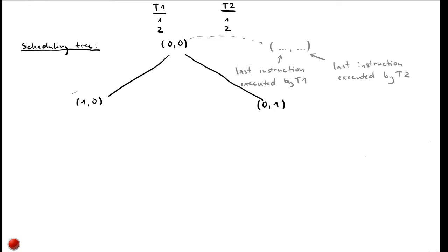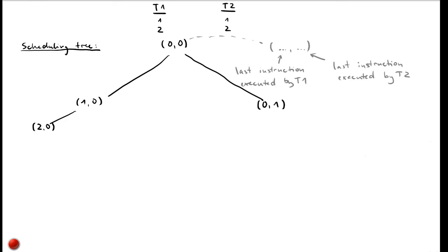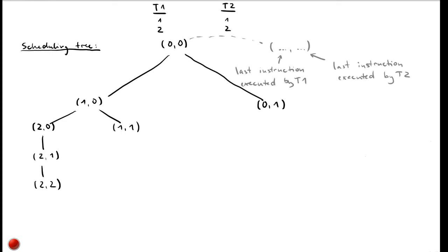After executing the first instruction in thread t1, we can execute thread t1's second instruction, after which the only option is to execute t2's first instruction and then its second. Alternatively, we could switch to thread t2 after t1's first instruction, reaching state 1,1. From 1,1 we again have two options: go back to thread t1 for its second instruction and then return to t2, or stay in thread t2 for its second instruction and then go back to t1, both ending in state 2,2.